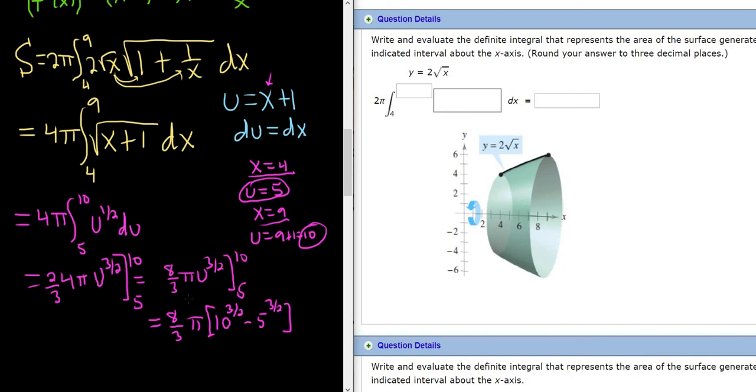This should be 171. Problem wants 3 decimals. 171.258. That would be the area of the surface of revolution that you get when you spin this graph around the x-axis. I hope this video has been helpful.